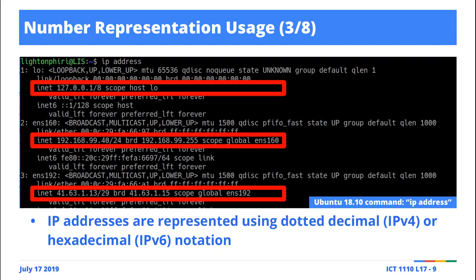We use dotted decimal format so that we can easily read the IP address, but what the computer does behind the scenes is convert these decimal numbers into equivalent binary numbers — ones and zeros.